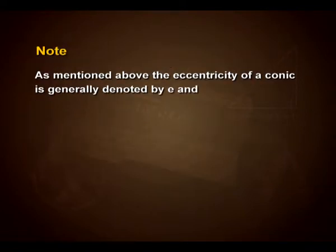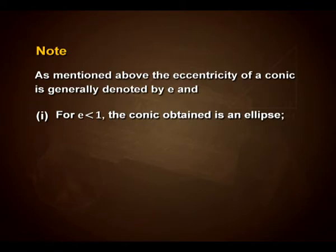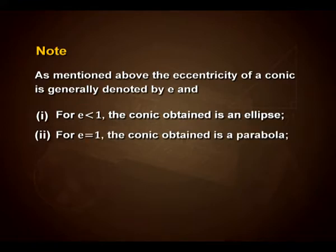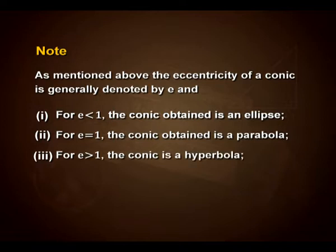Note that the eccentricity of a conic is generally denoted by E. For E less than 1, the conic obtained is an ellipse. For E equal to 1, the conic obtained is a parabola. For E greater than 1, the conic is a hyperbola. And for E equal to 0, the conic is a circle.